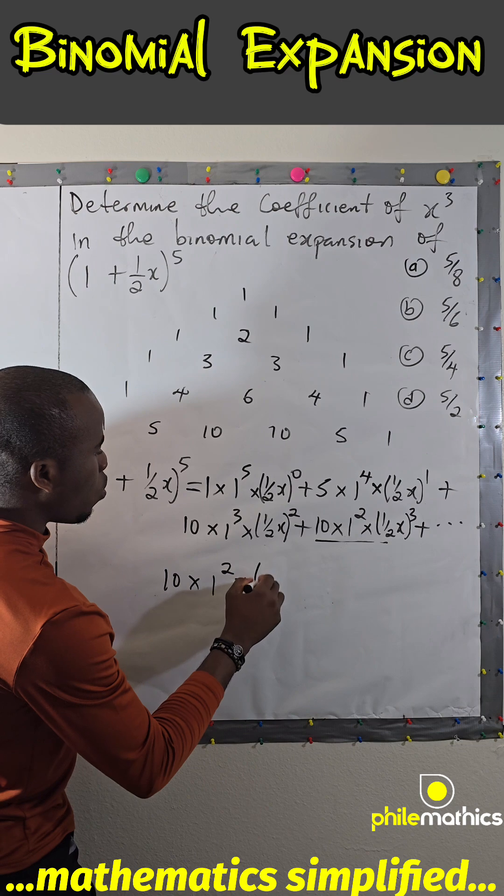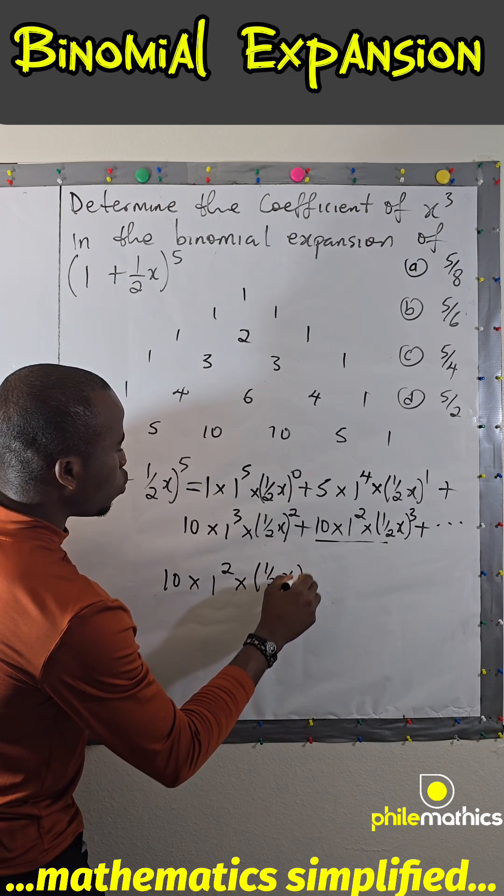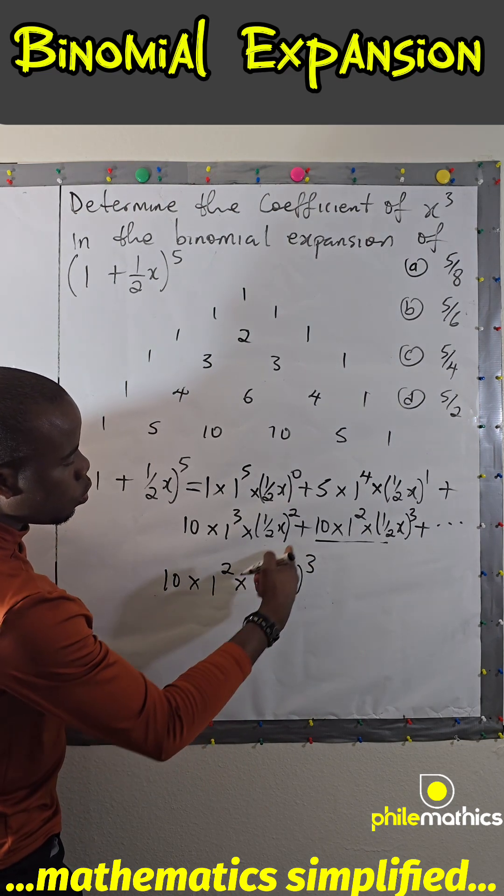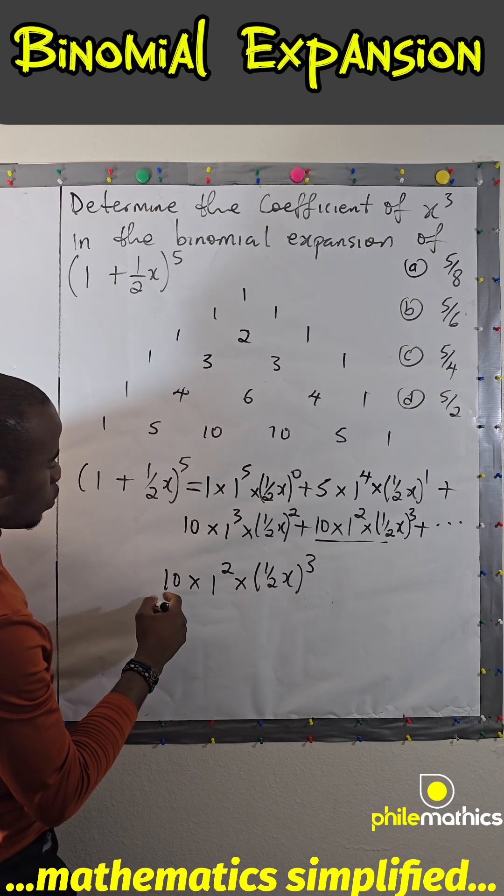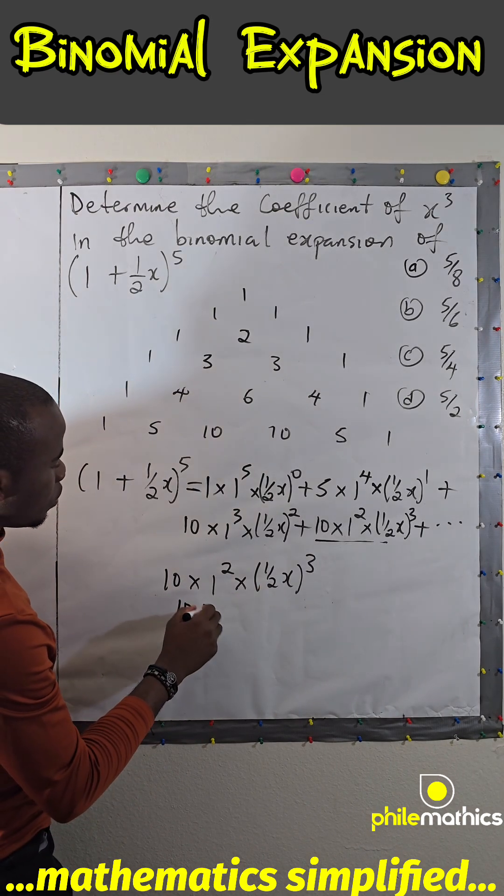Times (1/(2x))^3. (1/2)^3 is 1/8, so we have 10 times 1 squared is 1, times 1/8 times x cubed.